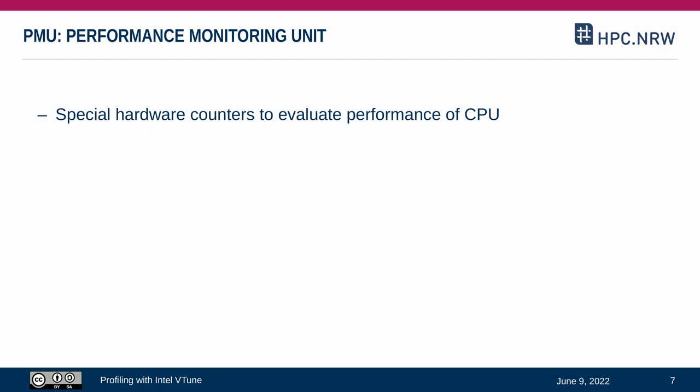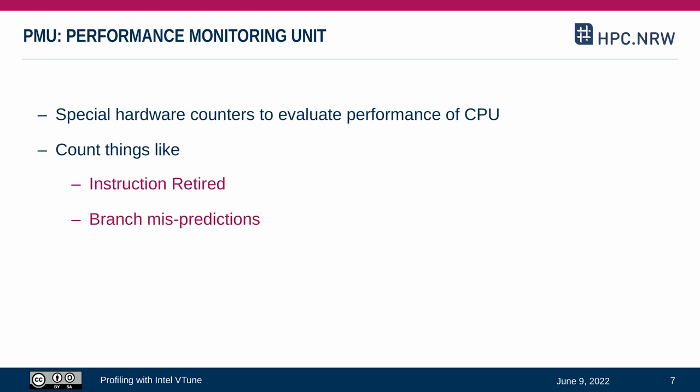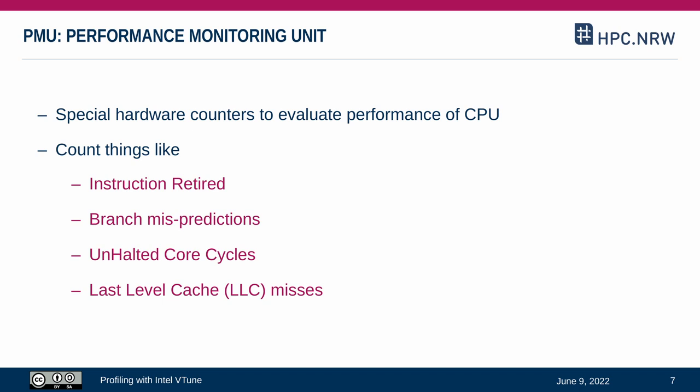The Performance Monitoring Unit is a special hardware component that counts hardware events. This is the part that Linux Perf or the vTune sampling driver is accessing to evaluate the CPU performance in greater detail. It is mostly counting occurrences of certain operations or conditions — for example, how many instructions have been retired in a certain time interval, how often did we have to re-steer and flush the pipeline because of branch mispredictions, how many cycles did the core spend in unhalted mode, or how often do we miss the data in our last level cache. There is a useful collection and description of all metrics in the vTune documentation, and you should not hesitate to make use of the reference manuals if your measurement highlights a specific problem.